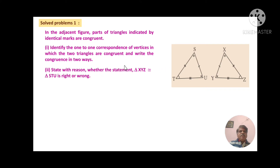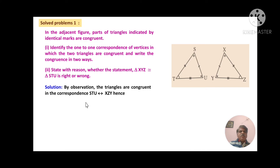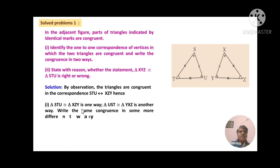Second, state with reason whether the statement 'triangle XYZ is congruent with triangle STU' is right or wrong. By observation, the triangles are congruent in the correspondence S, T, U — with the arc and cross marks — corresponding to X, Z, and Y respectively. This is the one-to-one correspondence. Hence triangle STU is congruent with triangle XZY is one way of writing the congruence, and triangle UST is congruent with triangle YXZ is another way.